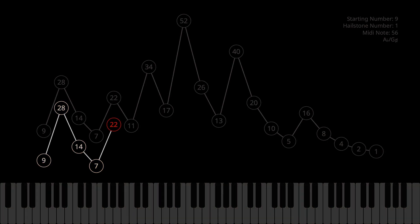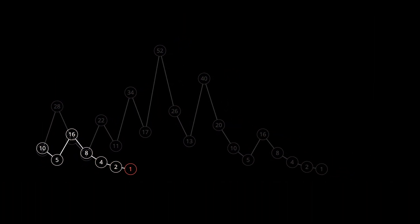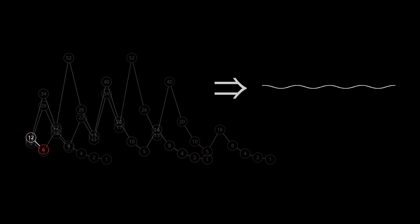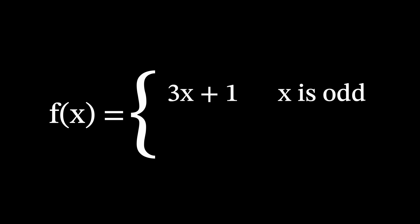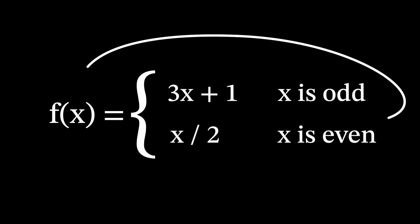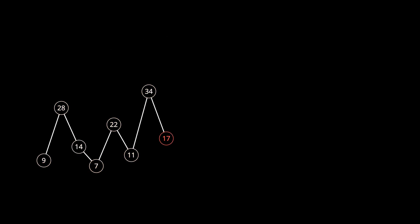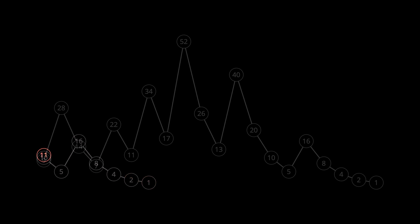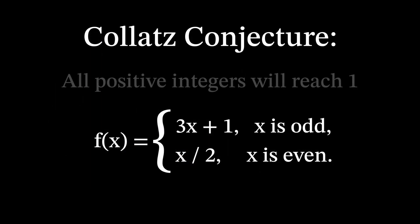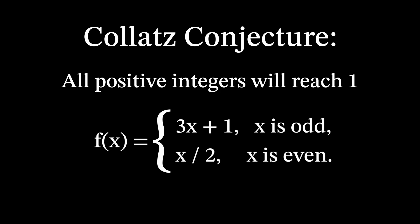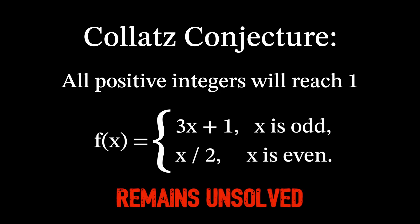Now we'll use these so-called hailstone sequences to generate sound as raw frequencies. As explained in part 1, the function used to generate the next number in the sequence is as follows: if the number is odd, triple it and add 1; if the number is even, divide it by 2. Repeating this operation yields wild numerical sequences that bounce around like hailstones, but always seem to return to 1. This is the Collatz conjecture — the statement that any starting positive integer for this process will eventually return to 1 — which remains unsolved to this day.